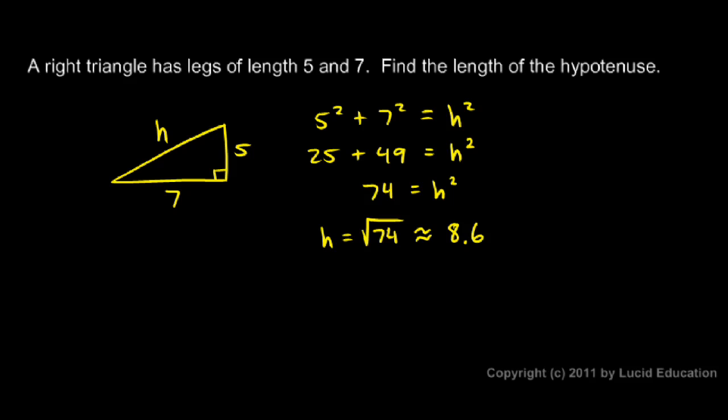When we write 8.6 here, we understand in a situation like this, where we don't have a perfect square, these decimal places really go on and on forever. When we stop after one digit, we understand that we're rounding there to the nearest tenth. This is really 8.6023 and so on. We'll just round it to 8.6. So that's our answer, the length of the hypotenuse.